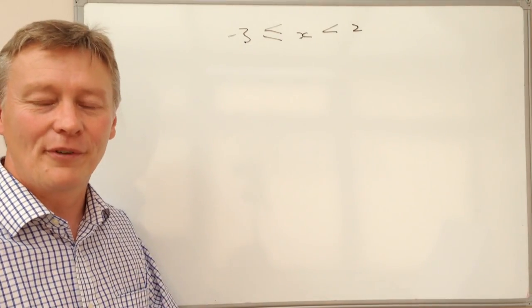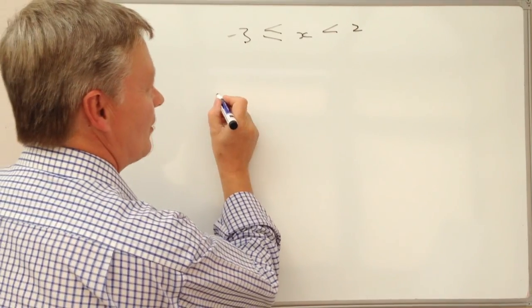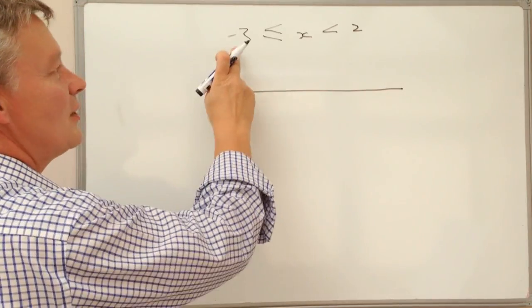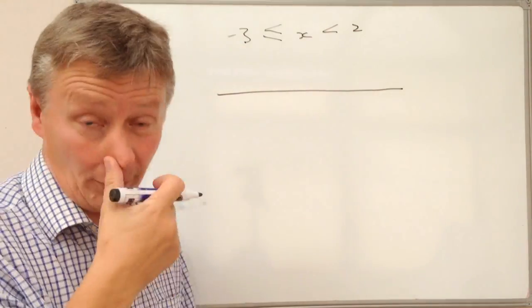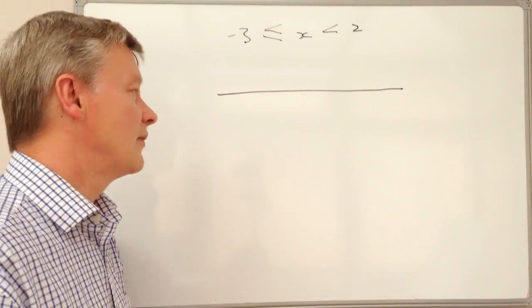...providing you follow some of the little rules that you need. So one of the ways that you can look at it is if it's a number line, then what we do is we have these two values. And what we're looking for is the solutions to x between those two values.